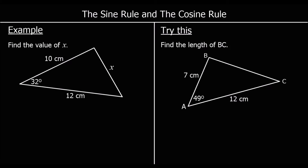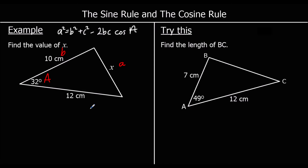Next up: find the value of x — x is a length. This time we don't have opposites; there's only one angle involved. But we do have two lengths and the angle between them, so we can use the cosine rule. The cosine rule says a squared equals b squared plus c squared minus 2bc cos A. Our angle is big A — we've only got one angle. Opposite big A is little a, and the other two — either way round — are b and c. So substituting in: x squared equals 10 squared plus 12 squared minus 2 times 10 times 12 cos 32.